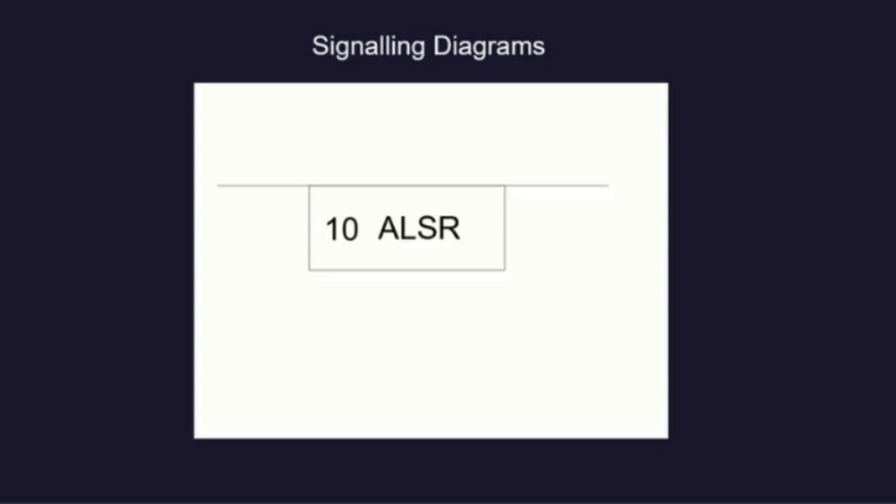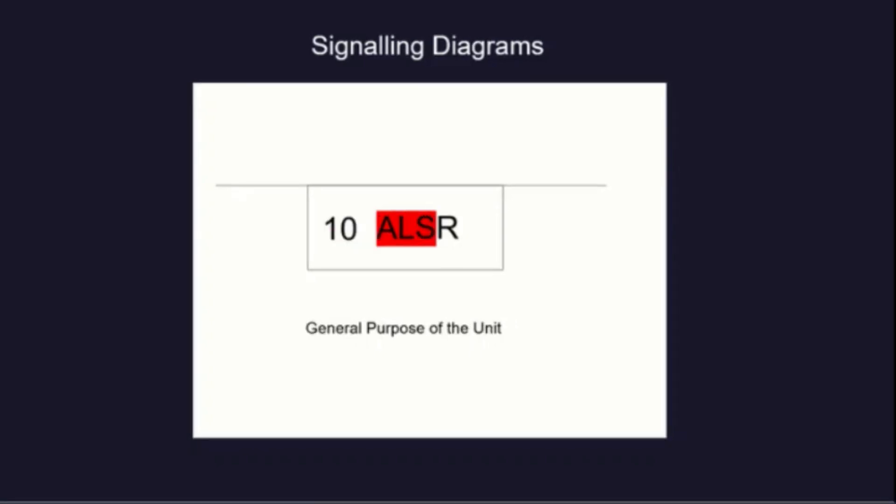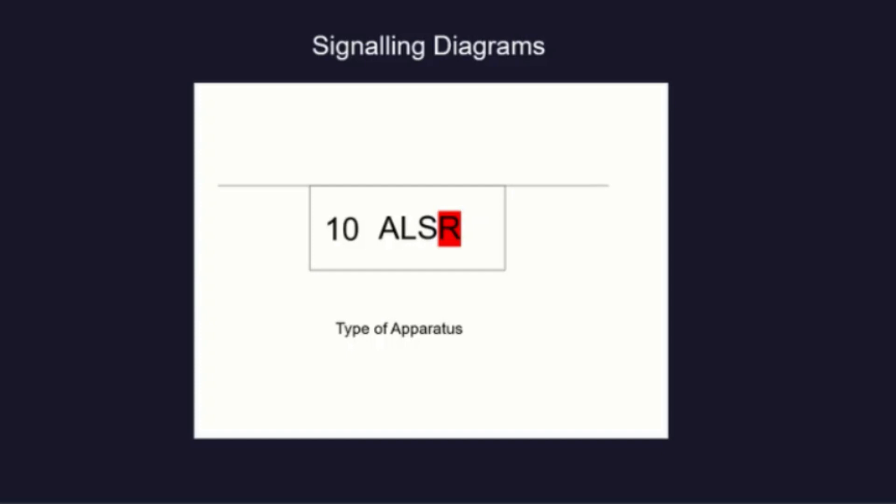Let's see how it works. The first letter or letters or number relates to the lever, signal, points or track circuit concerned. If letters are used, they are normally hyphenated, e.g. AB. The remaining letters, with the exception of the last letter known as the prefix, designates the general purpose of the unit. The last letter denotes the type of apparatus. Okay, let's have a look at our example in more detail using the code.